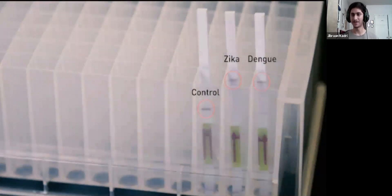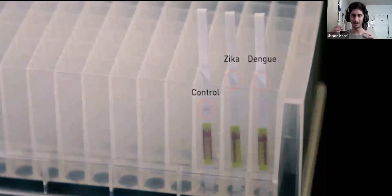And we can see this happening in real time. So, this is Zika and Dengue. We can see that there's actually a line forming at a point, whereas in the control, it forms somewhere else. So, therefore, we can distinguish whether this is positive or a negative test.